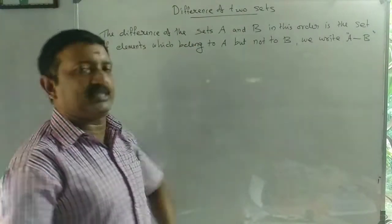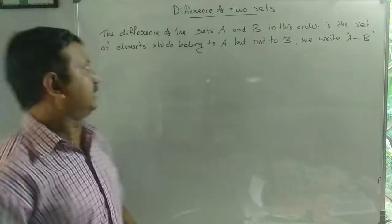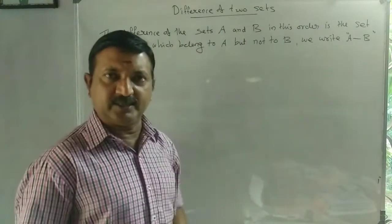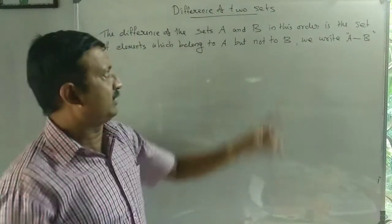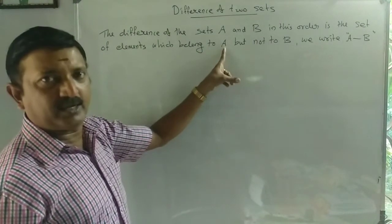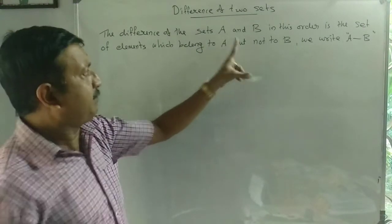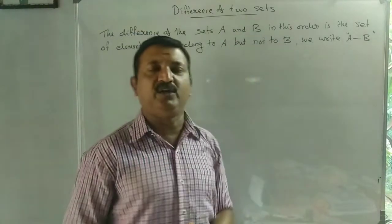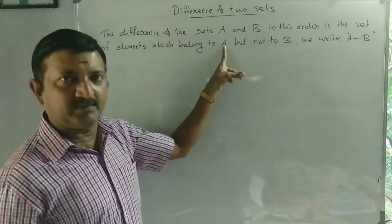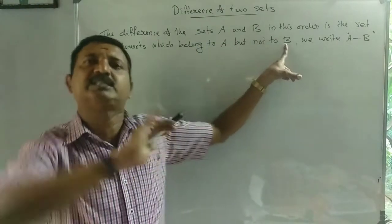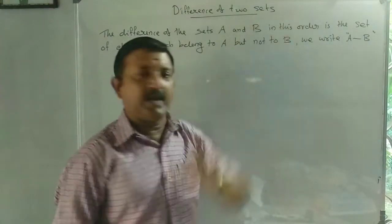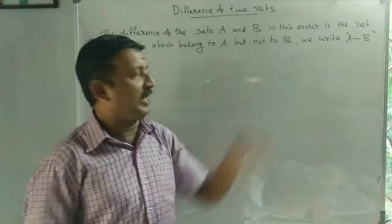Difference of two sets. The difference of set A and B — the difference in this order is the set of elements which belong to A minus B, but not B. That is, A and B: the difference contains elements that belong to A but B elements are avoided — B elements are eliminated. We write A minus B. That is the symbol of A minus B, difference of two sets.